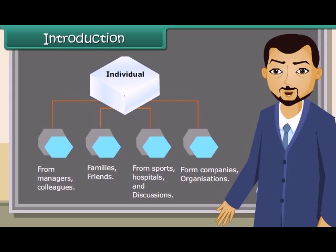Types of data. Primary data and secondary data. Data which are not originally collected but obtained from published or unpublished sources are called secondary data.